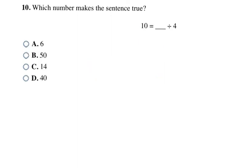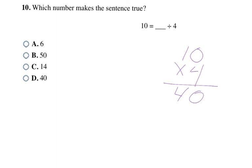Here's an example with division. I can look at my choices and fill in the blank to see which one makes sense: 6 divided by 4, 50 divided by 4, 14 divided by 4, or 40 divided by 4 — which one equals 10? Using opposite operations: the opposite of dividing is multiplying, so 10 times 4 equals 40. Putting 40 in the blank: 40 divided by 4 is 10 — it checks out. Choice D is my final answer.